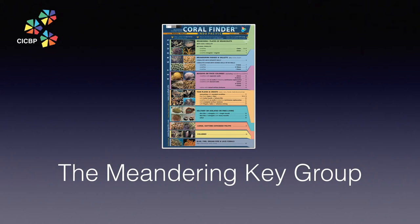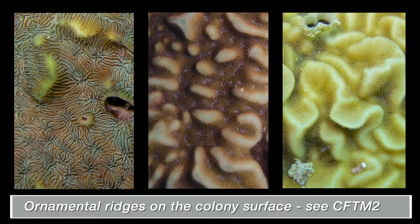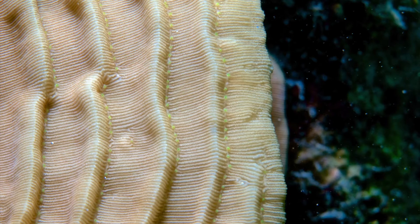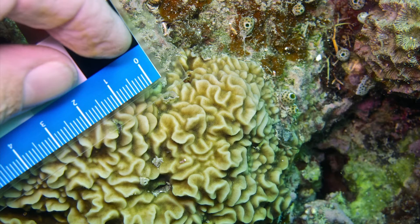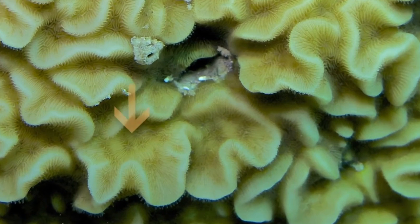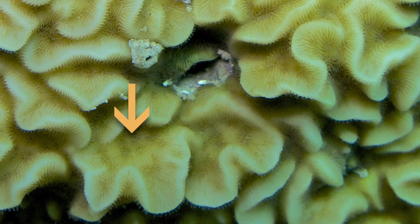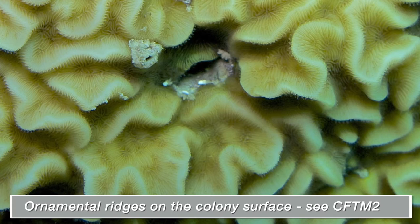Finally, we are going to look at another group of corals that have a meandering appearance. In these examples, the meandering valleys are not related to the formation of coralite walls. You will recall from Coral Finder Toolkit 2.0 Training Movie 2 that we met a group of corals forming ridges on the colony surface unrelated to the development of coralite walls. In some cases, we call these meandering ridges and valleys ornament. Up close, these ornamental ridges conceal tiny groups of coralites linked by septocosti, which means the ridges are ornament on the colony surface and not coralite walls.